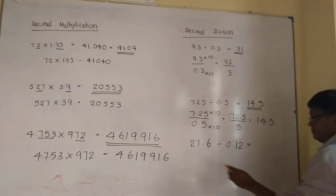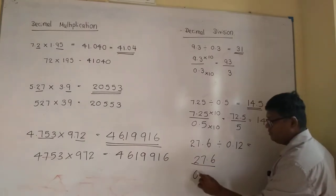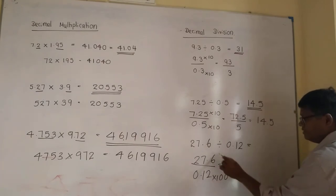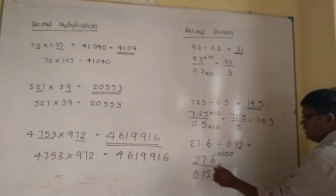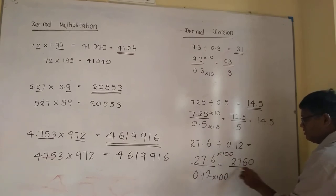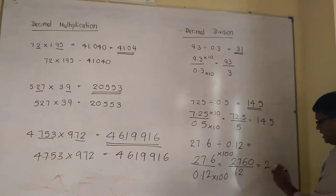This one: 27.6 divided by 0.12. That means you have to multiply by 100. When you multiply this by 100, you get 2,760. Then divide 2,760 by 12. 12 times 2 is 24, 25, 26, 27, 3 remains. 36 means 3 times 12 is 36. No remainder, 0. Answer is 230.